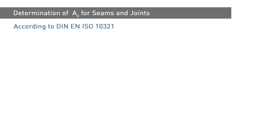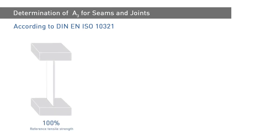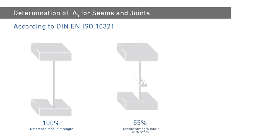In either case, the tensile strength is determined in accordance with DIN EN ISO 10321, and compared to the reference tensile strength of the material without joint or seam. The seam strength, determined in this example for a woven, corresponds to 55% of the tensile strength of the material without seam.